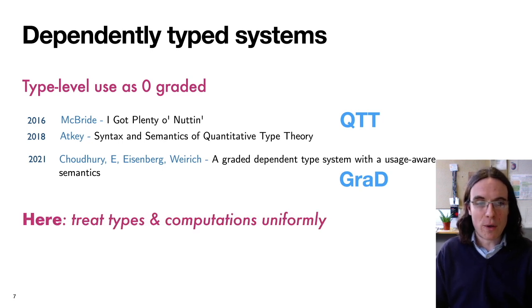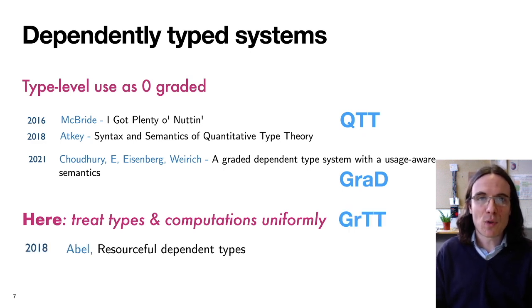What we're doing here though, is that we're going to treat types and computations uniformly when it comes to grading. So the grading is going to be able to speak about both type level use and computational use. And that's our system. This idea was also proposed by Andreas Abel, who had a related idea, which our system extends in various directions.